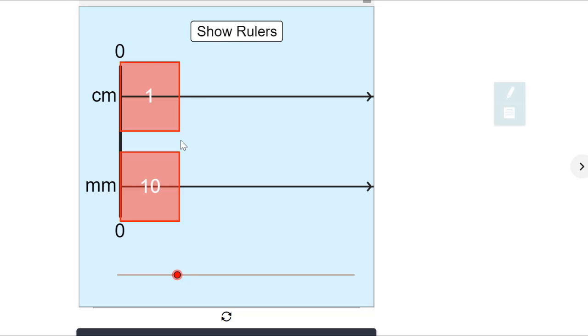Let's try it in our tape diagram. So you have one centimeter and 10 millimeters. But what if I move to two centimeters? So now I have two centimeters, 10, 20 millimeters.